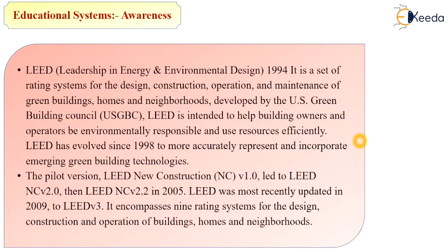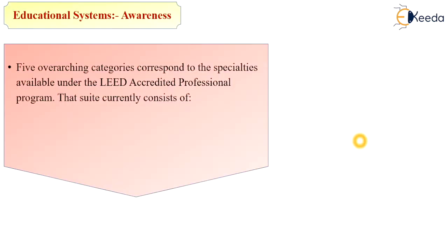The pilot version of LEED new construction led to LEED NC 2.2 in 2005. LEED was most recently updated in 2009, i.e., version 3, with 9 rating systems for the design, construction, and operation of buildings, homes, and neighborhoods. Five overarching categories correspond to the specialties available under the LEED Accredited Professional program.